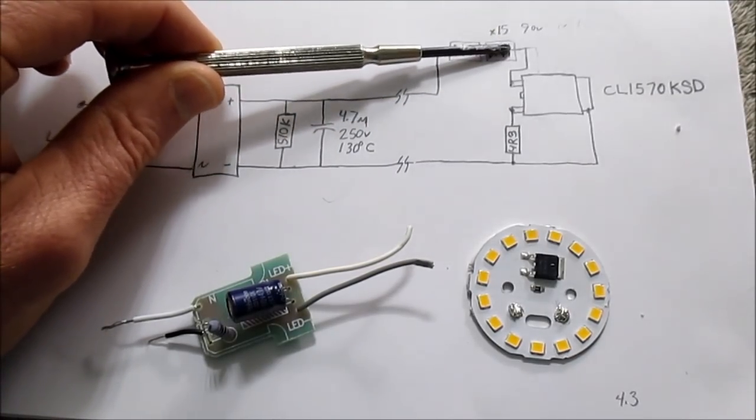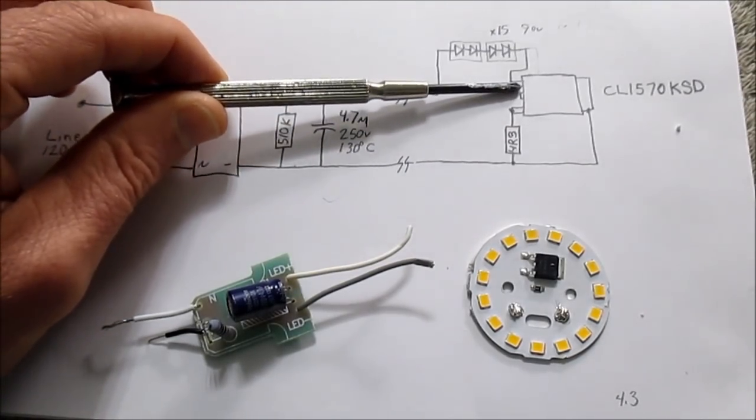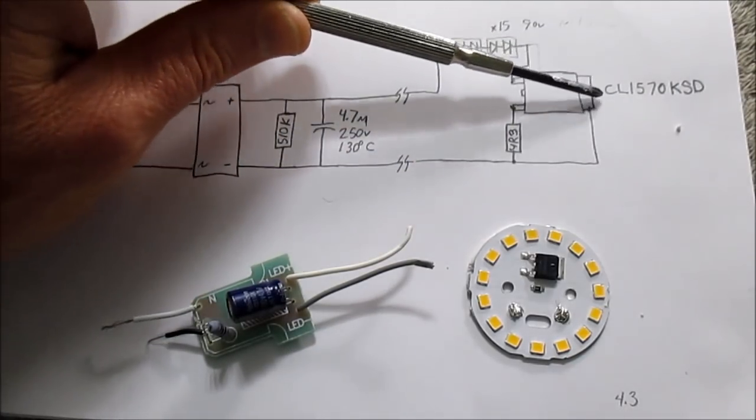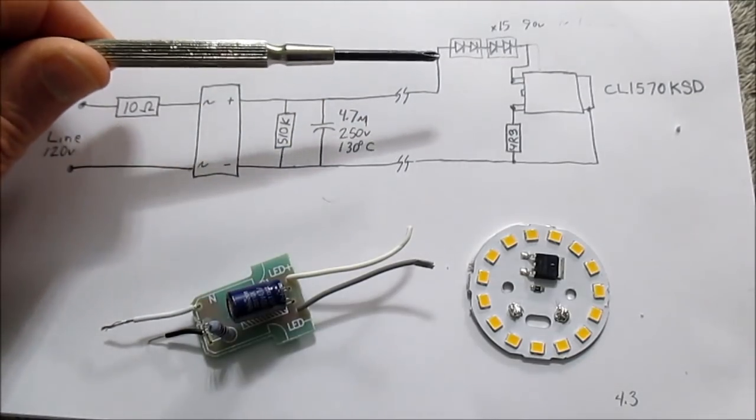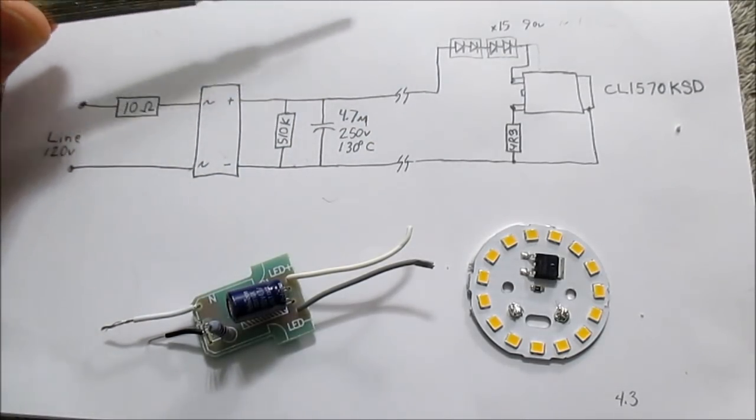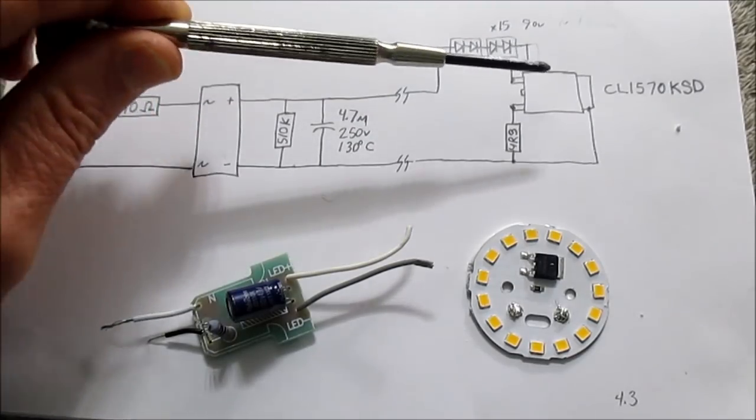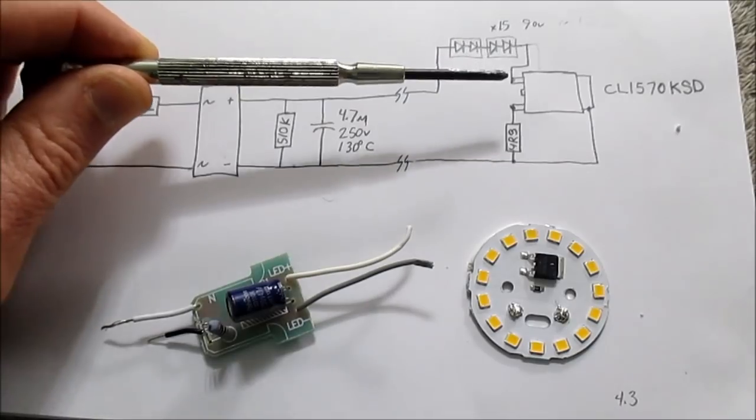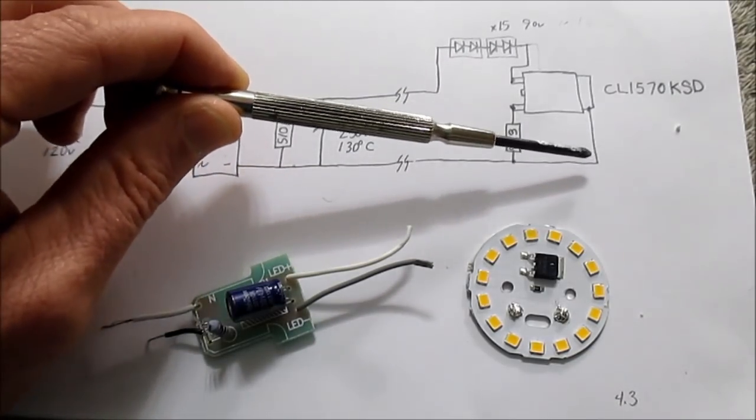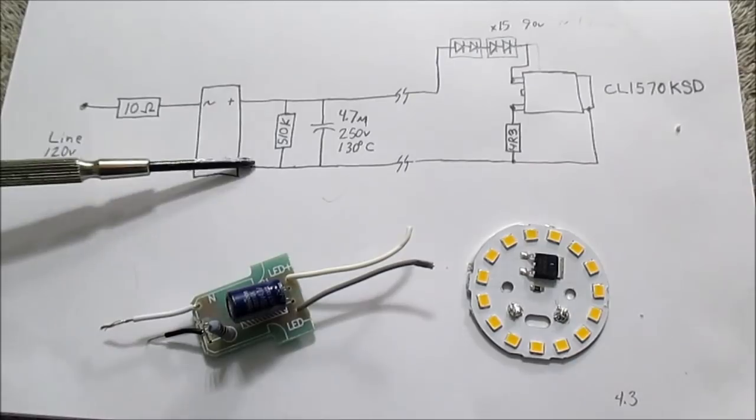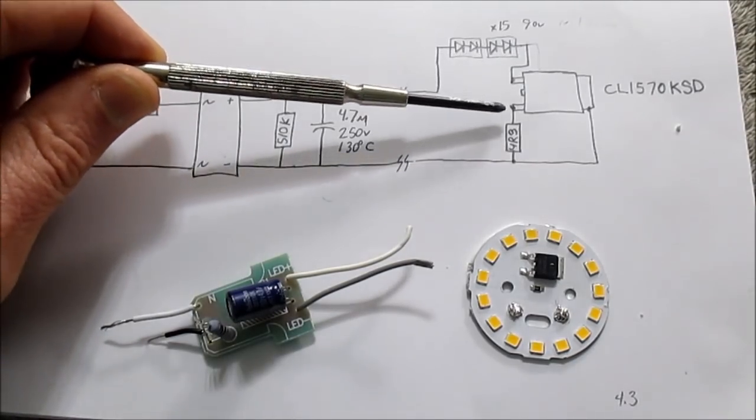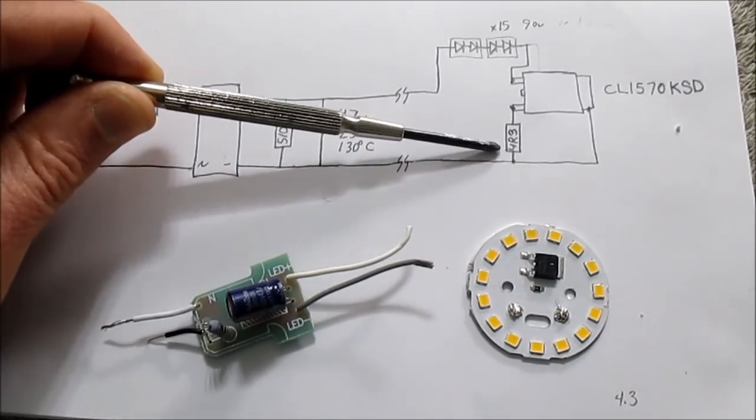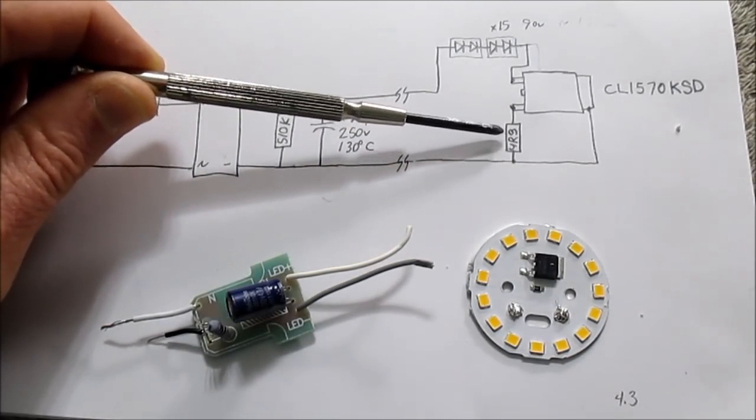And then on the cathode side of the LEDs, it connects to this current regulator, which this is the part number. And I found the data sheet in Chinese. So sometimes you can get a little bit of information off of that. And the tab connects to the negative side of the supply. And this resistor here sets your current, I believe. And it looks like it's 4.3 ohms.